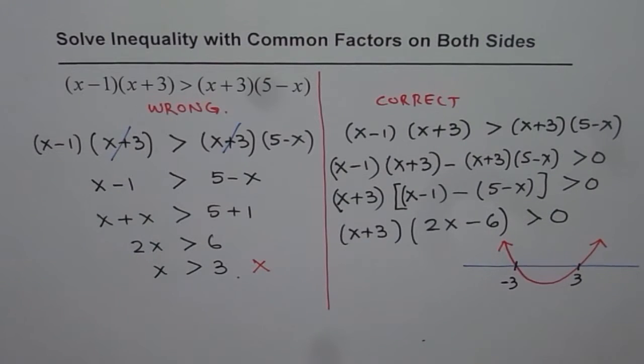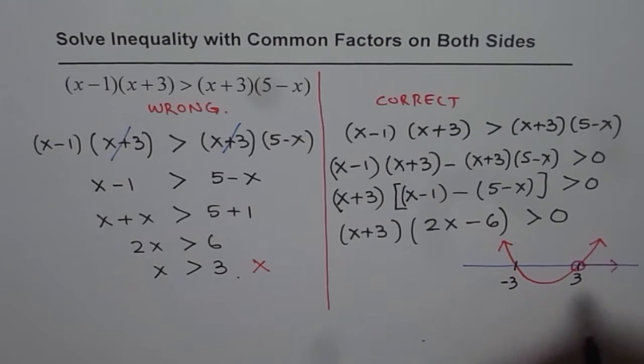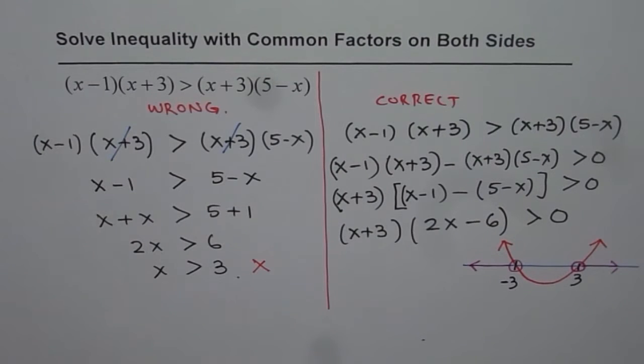Since we are looking for greater than 0, the solution set should be this set and this set. So the solution is not just x > 3 - that's just part of the solution. x < -3 is also part of this solution. Do you see that part? That is how you can solve it very efficiently.